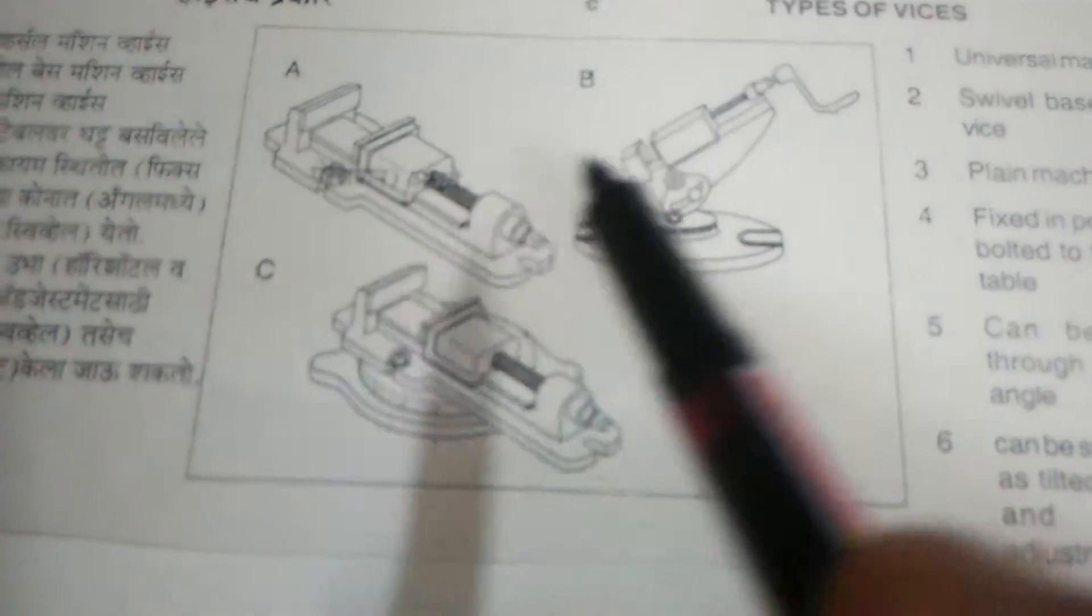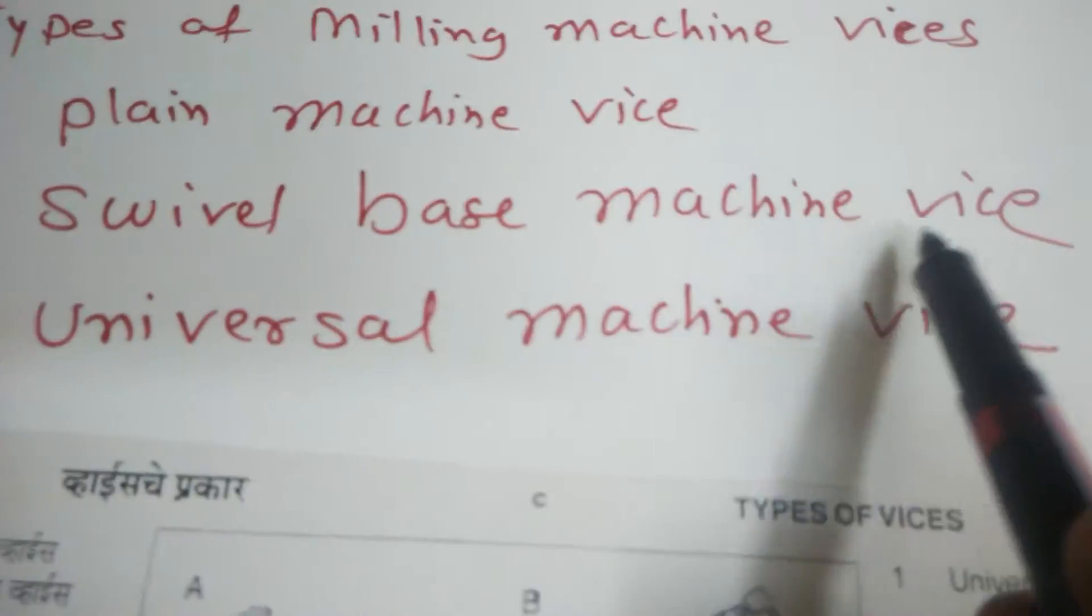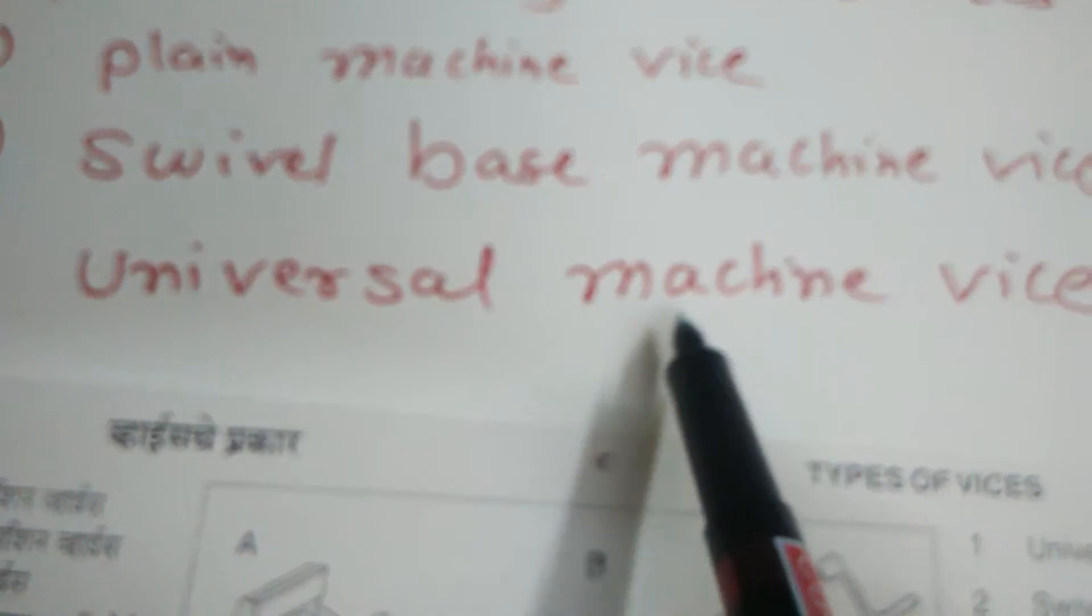These are Milling Machine Vices. Types of Milling Machine Vices: Plain Machine Vice, Swivel-based Machine Vice, Universal Machine Vice.